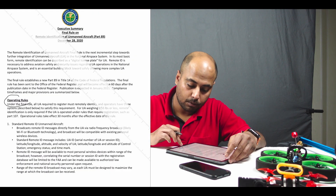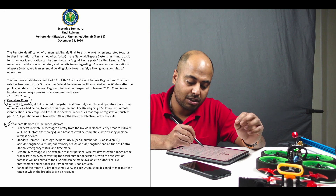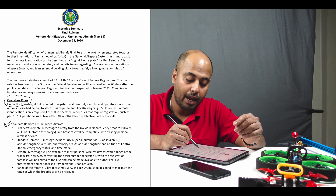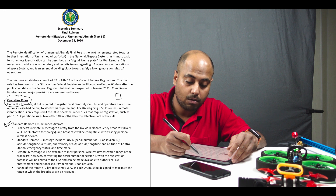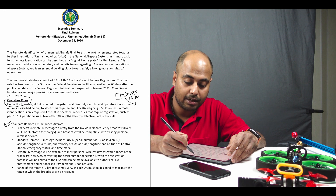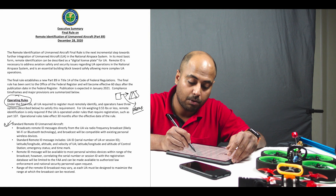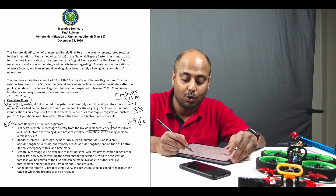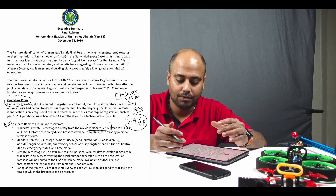Section one covers Standard Remote ID: the unmanned aircraft broadcasts Remote ID messages directly from the UA via radio frequency — likely Wi-Fi or Bluetooth — and the broadcast will be compatible with existing personal wireless devices. You'll connect that to your phone to relay the message. Keep in mind that 2.4 GHz offers longer range while 5.8 GHz has shorter distance coverage.